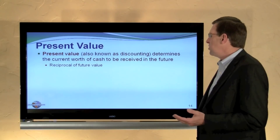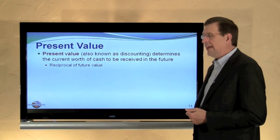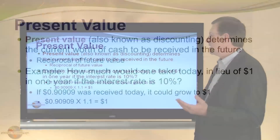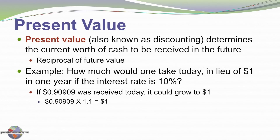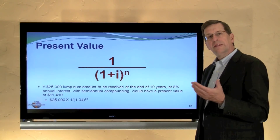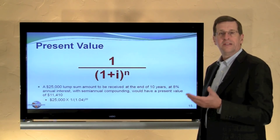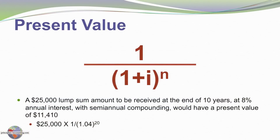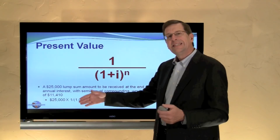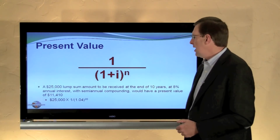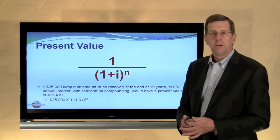Present value is just the opposite of future value, also known as discounting. It determines the current worth of cash to be received in the future using reciprocal mathematics. For example, how much would one take today in lieu of $1 to be received in one year at 10%? The answer is $0.9090, or 90.9 cents — the factor is 1 over 1.1 to the first power. Extending this, a $25,000 lump sum received at the end of 10 years with 8% annual interest compounded semi-annually has a present value of $11,410, calculated as $25,000 times 1 over 1.04 to the 20th, where 4% is the semi-annual rate and 20 reflects 10 years of semi-annual periods.